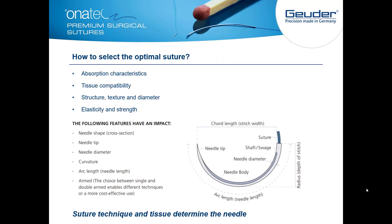How to select the optimal suture? The decision is oriented by absorption characteristics, tissue compatibility, structure, texture and diameter, elasticity, and stress.